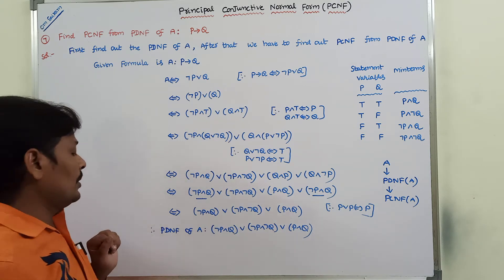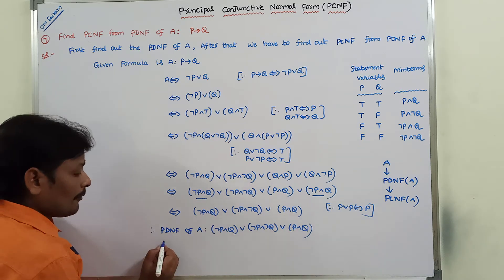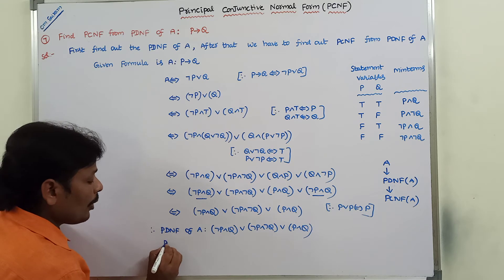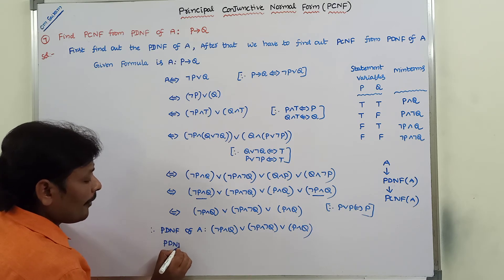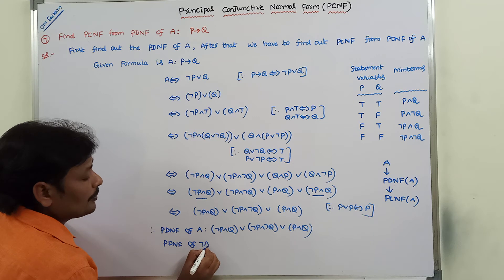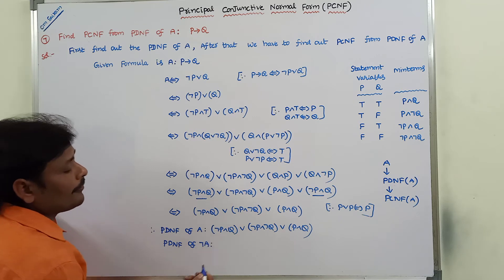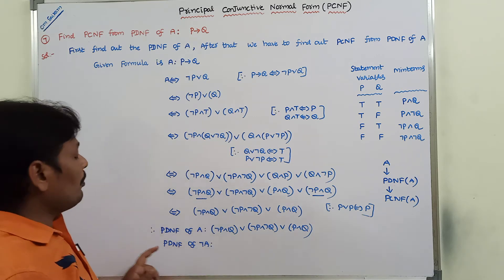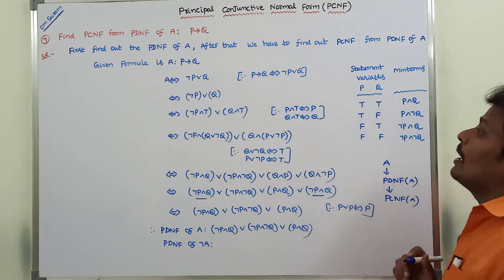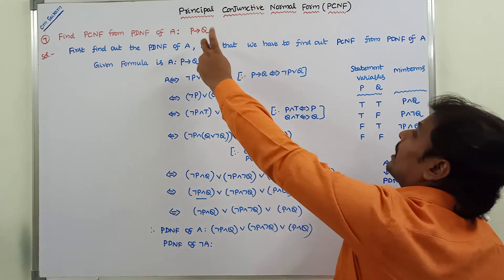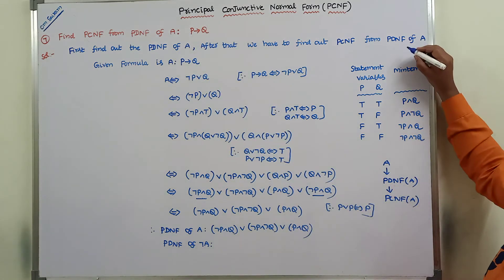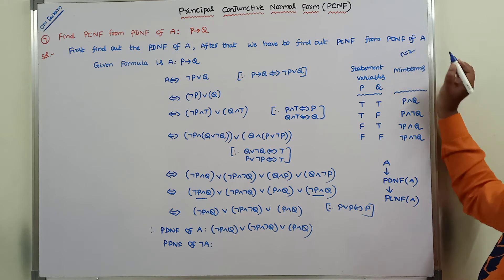Therefore, PDNF of A = (negation P ∧ Q) ∨ (negation P ∧ negation Q) ∨ (P ∧ Q). Now we move to finding the PDNF of negation A. First, how many variables are in the given formula? That is 2, so N = 2.